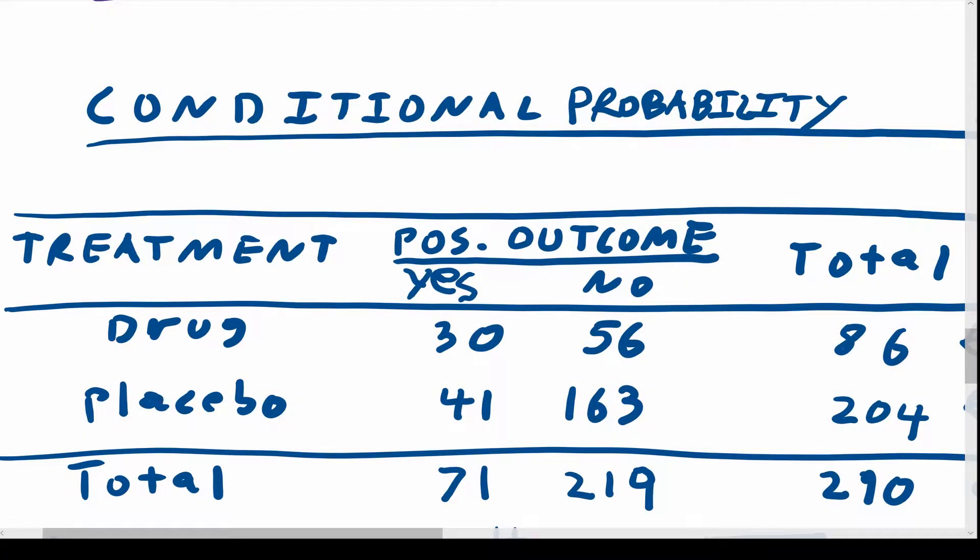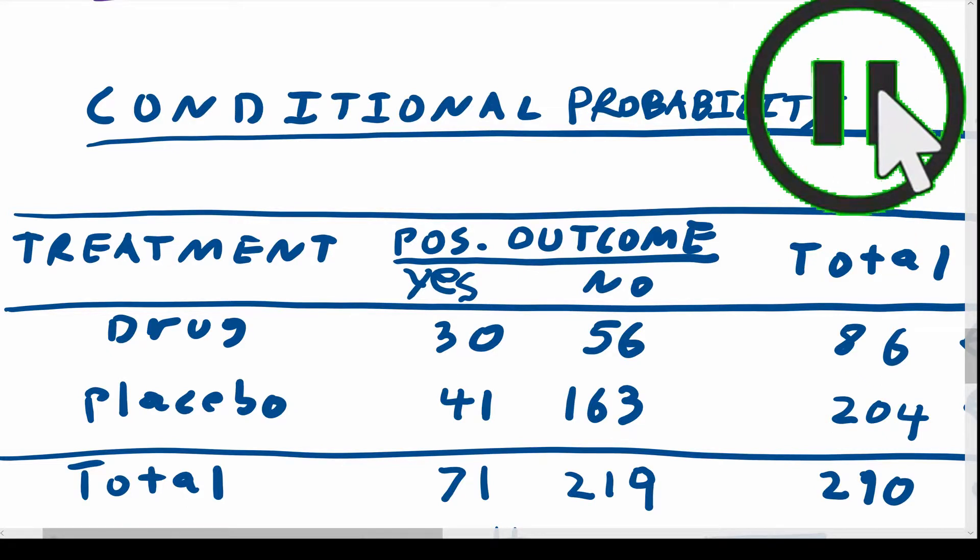Today we are going to be talking about conditional probability, and I'd like to begin this video by having you copy down this 2x2 cross-classification frequency table, also known as a contingency table. Pause the video, copy this down, and I will then hopefully lead you through some ideas.